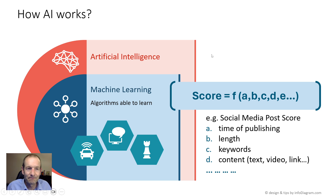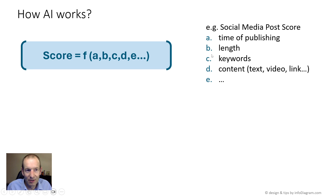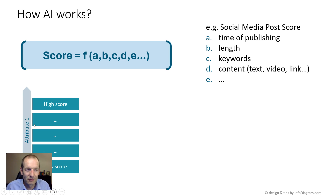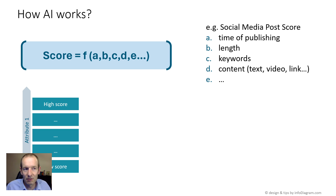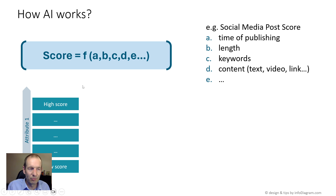So how do you explain it? You can use visual forms to explain this kind of formula. Let's do it step by step. First, you can explain how one parameter would look. If the score is based on one attribute, then it's a simple function — for example, if the time is 10 a.m., the score will be higher than if you post at midnight.